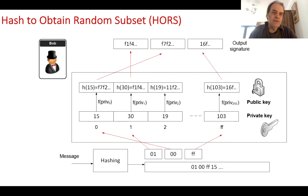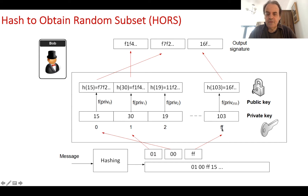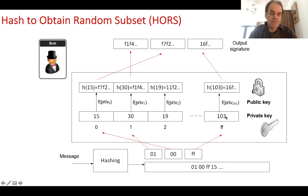The method we'll look at is hash to obtain random subset. Initially, we create a number of random values and put them into an index — this becomes our private key. In this case, let's say we have 256 values in our private key, indexed from 0 to FF (which is 255), with a maximum value of 256.